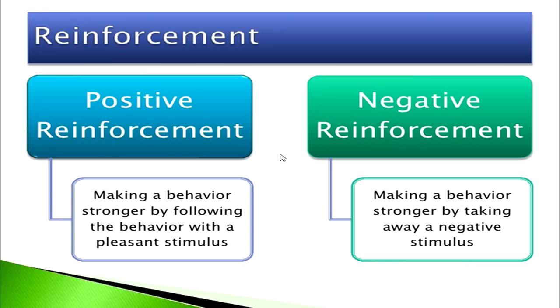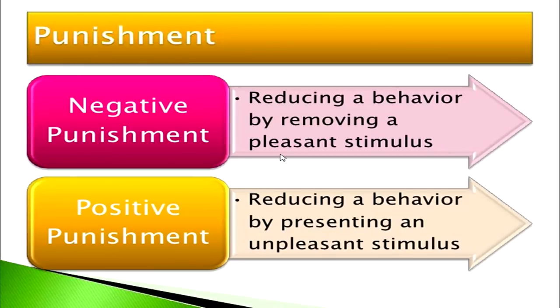To summarize: positive reinforcement is making a behavior stronger by following it with a pleasant stimulus. Negative reinforcement is making a behavior stronger by taking away a negative stimulus. Negative punishment is reducing a behavior by removing a pleasant stimulus. Positive punishment is reducing a behavior by presenting an unpleasant stimulus.